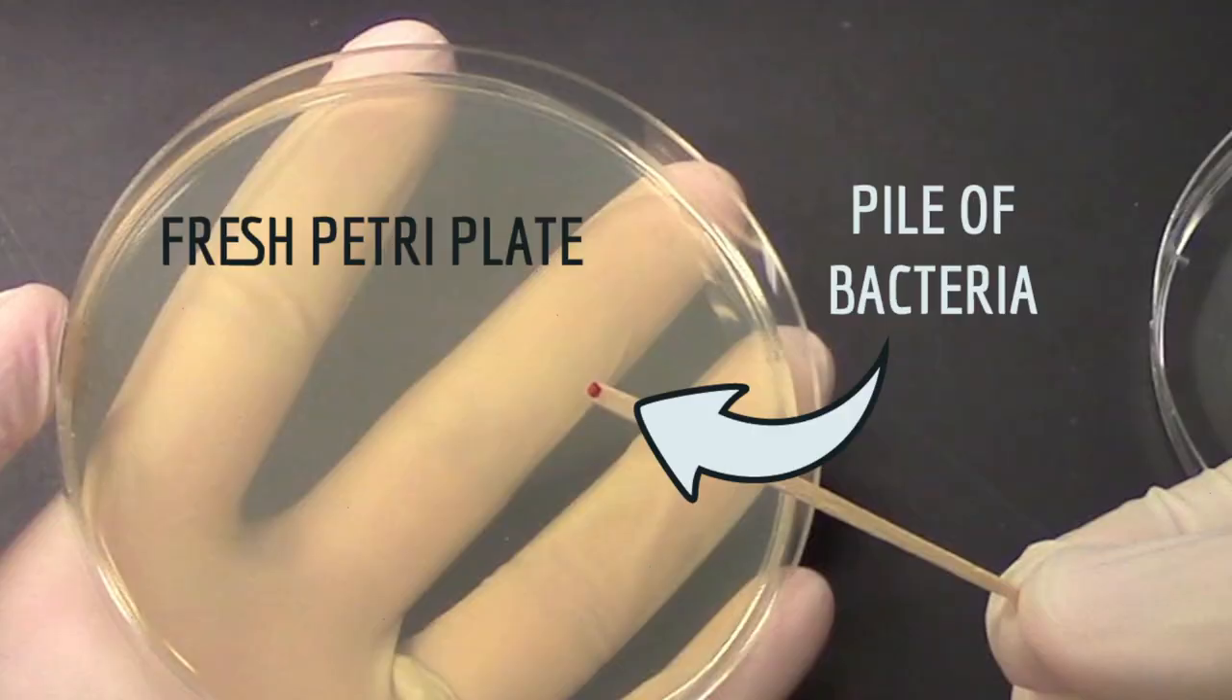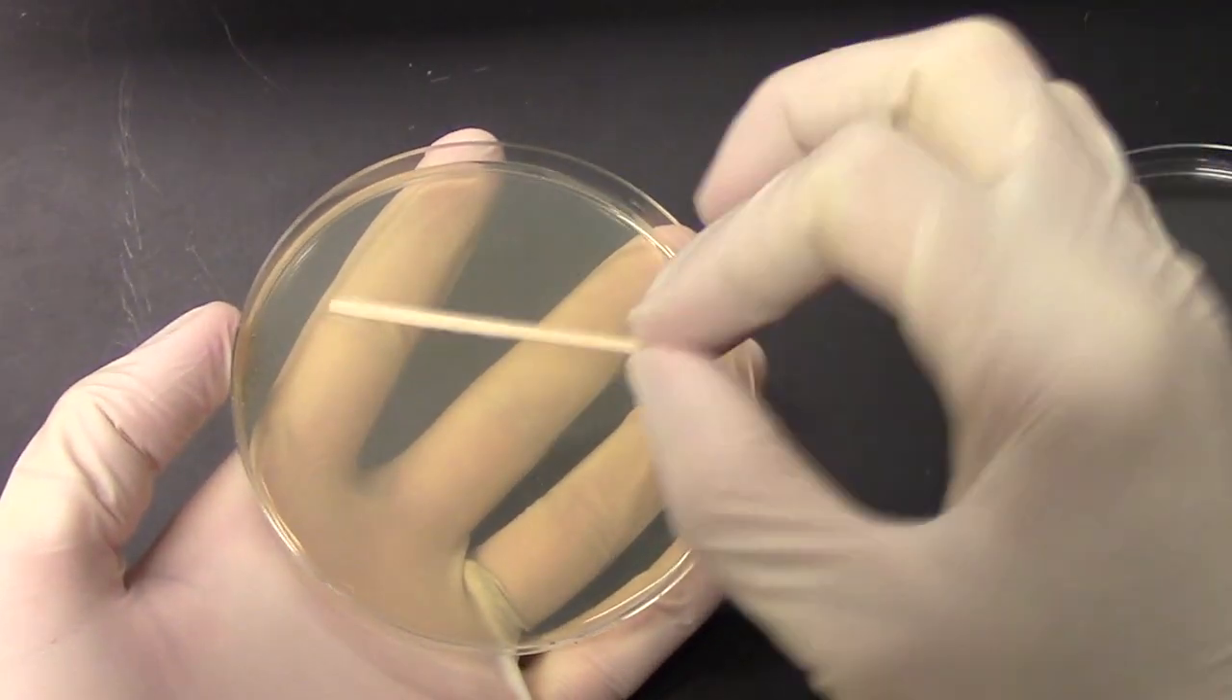Make sure it's sterile. Once the cells are on your toothpick, you streak them onto a petri plate. If you streak enough, then the cells on the toothpick will eventually become diluted enough that you'll be laying down individual cells, which, if they're far enough apart, they'll grow into single colonies.